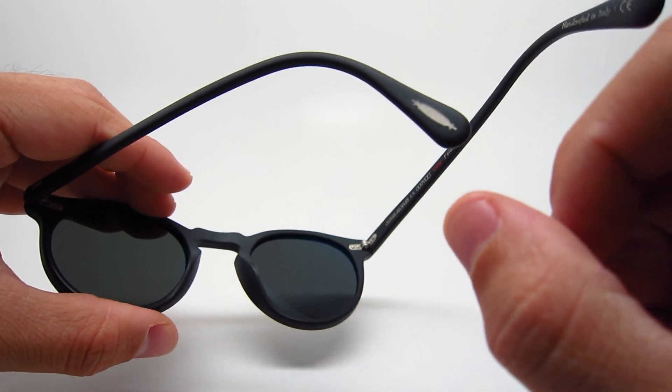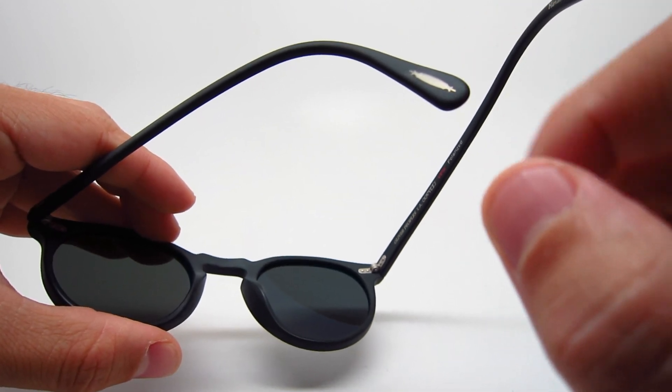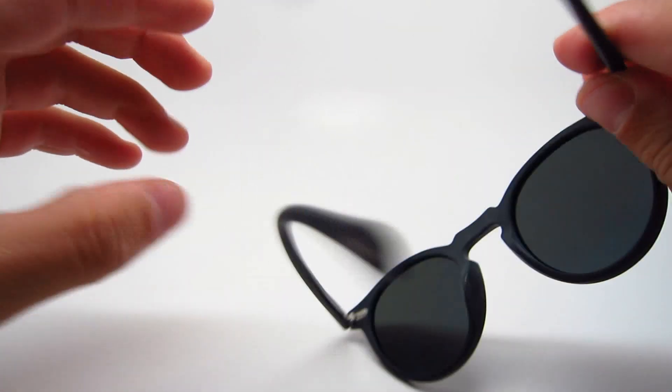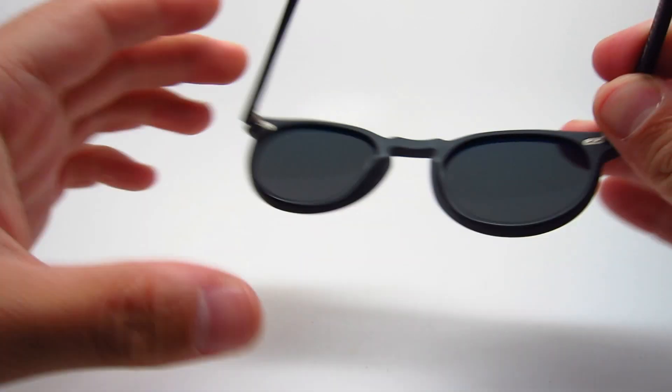It also has the Oliver Peoples logo at the end of the temple, not on the right side, just on the left.